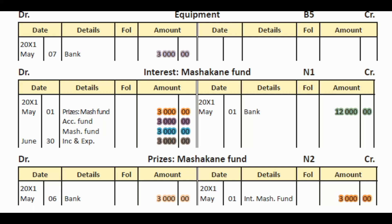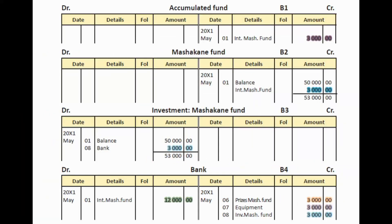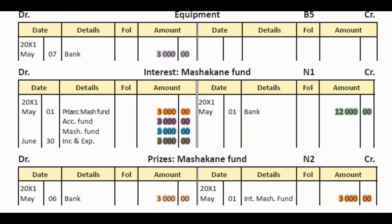Next we enter the transaction for the purchase of equipment — a normal entry just like any business buying equipment. We debit equipment and credit bank with $3,000 because we pay cash. On the debit side of equipment you'll see bank highlighted in light purple — debit equipment, credit bank with $3,000.